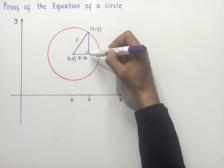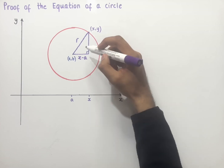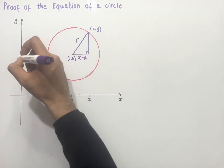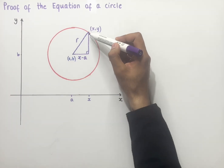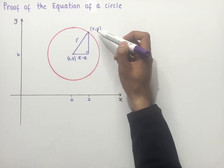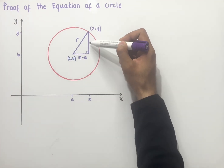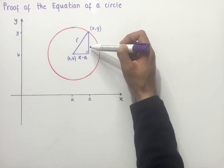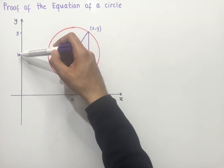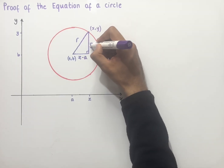Likewise, if we wanted to work out the perpendicular height of this right angle triangle, the center has a y coordinate of b and this point has a y coordinate of y. So if we want the perpendicular height we would take the length y and subtract the length b, which gives us y minus b.